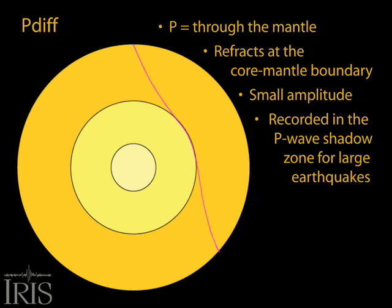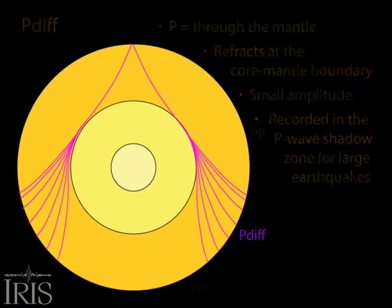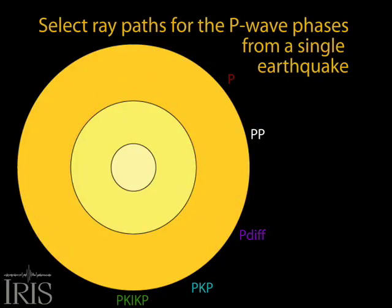On seismograms, P-Diff waves usually have small amplitudes and gradual onsets. This is due to the loss of energy as the waves are diffracted by the core mantle boundary.